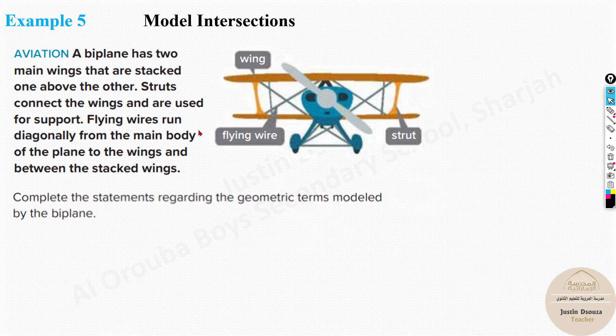And now we have the example five. You can see it's about an aircraft. A biplane has two main wings that are stacked one above the other. Struts connected the wings and are used for support. See, can you see the struts? These connect the wings and they're like support. Flying wires, these are the flying wires, run diagonally from the main body of the plane to the wings that are in between that of the stacked wings. So over here they are just for more support. Now this is wings, flying wires and strut.